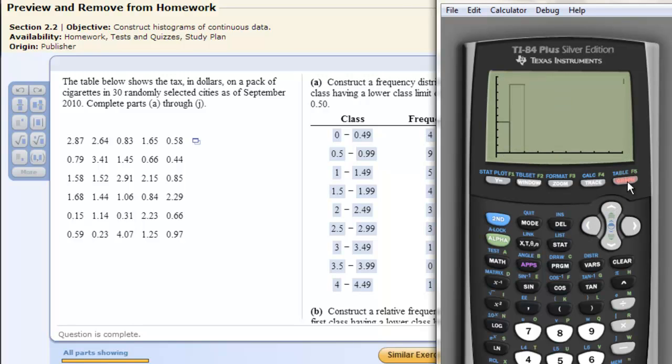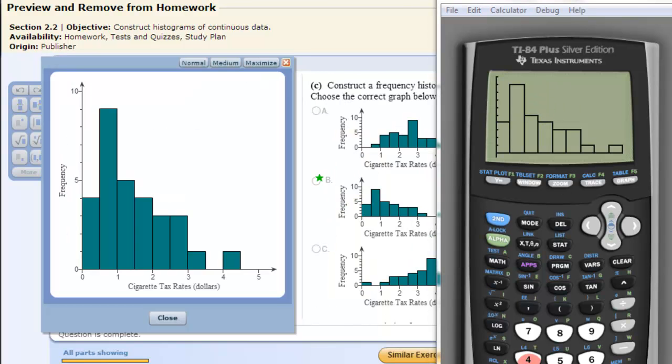Then we can click graph. And then there is our histogram. You can see that that matches the histogram here. That's the correct answer. B for this one. Perfectly right. There's everything. Looks slightly different because of the scale. But they're showing the same numbers.